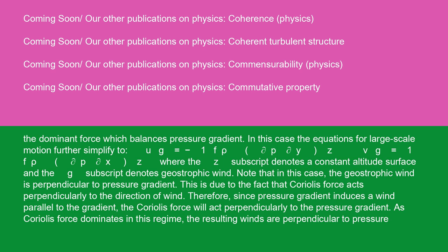This is due to the fact that Coriolis force acts perpendicularly to the direction of wind. Therefore, since pressure gradient induces a wind parallel to the gradient, the Coriolis force will act perpendicularly to the pressure gradient. As Coriolis force dominates in this regime, the resulting winds are perpendicular to pressure gradient.